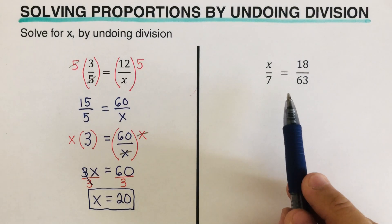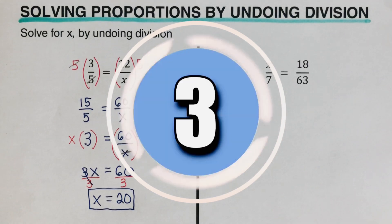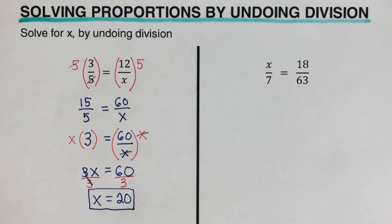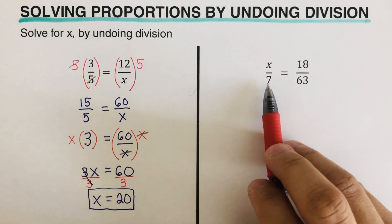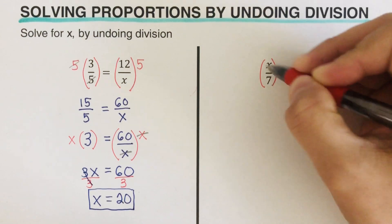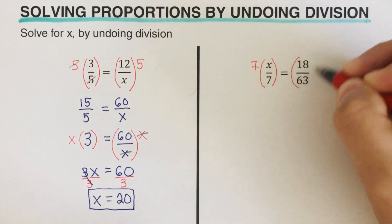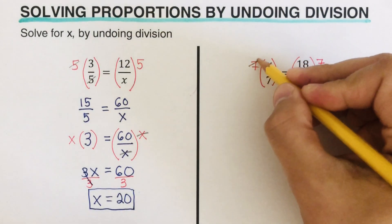At this point I would encourage you to pause the video and try this next problem on your own, then unpause and check your answer. For this problem, since 7 is in the denominator of the first fraction, I'm going to multiply both sides by 7.